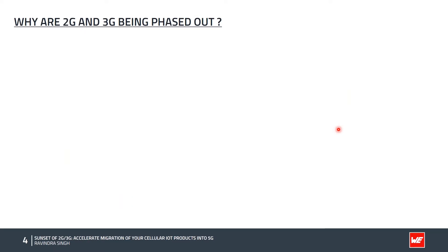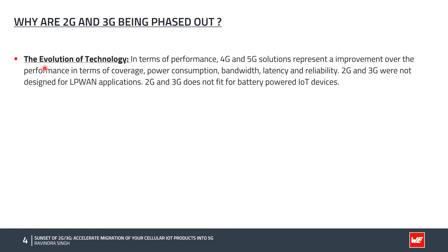Now the question comes: why are 2G and 3G being phased out? There are many reasons. The first is the evolution of technology. In terms of performance, 4G and 5G solutions represent an improvement over 2G and 3G in terms of coverage, power consumption, bandwidth, latency, and reliability. Also, 2G and 3G were not designed for low power wide area network or IoT applications, hence they do not fit for battery-powered IoT devices.